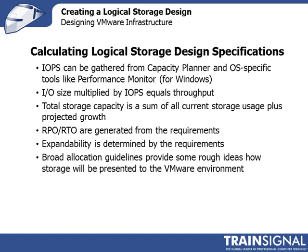Total storage capacity is probably the easiest value to determine — it's the sum of all current storage usage plus your projected growth. If the functional requirements say you need 20%, 30%, or 40% growth, you have to include that in your total storage capacity. You also need to include growth projections in IOPS and other dimensions of storage as well.